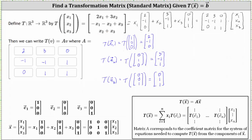And if we look at matrix A again, notice how the first column is (2, negative one, zero), the second column is (3, negative one, one), and the third column is (0, one, one). So these are two valid methods for determining matrix A under the given matrix transformation. I hope you found this helpful.